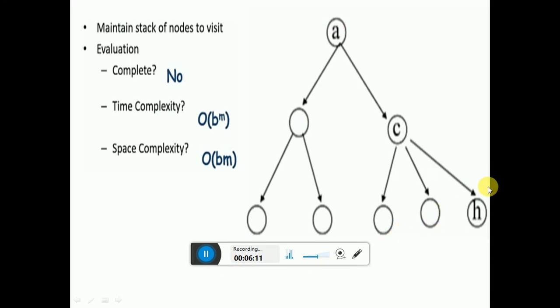We cannot reach the goal. Suppose the goal state is on the right side and we are searching from the left side. If the number of depth levels are infinite, then we cannot reach the goal. We will circulate between infinite states. If the states or paths are infinite, then there is no completeness. Complete: no.